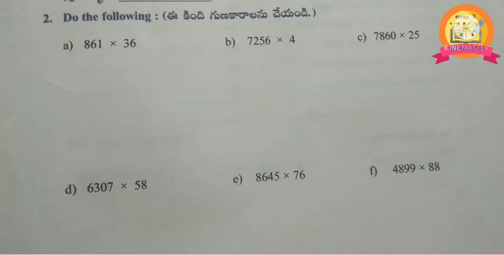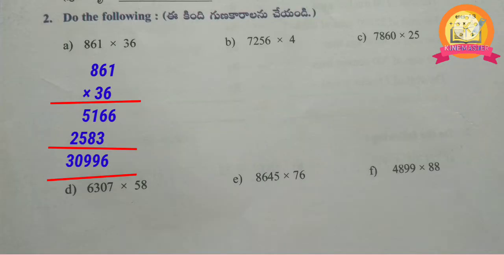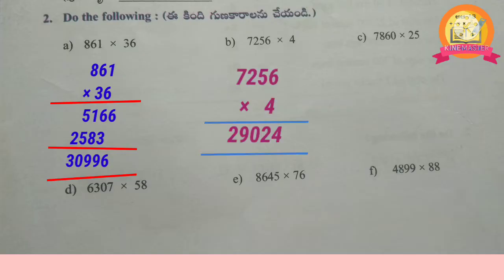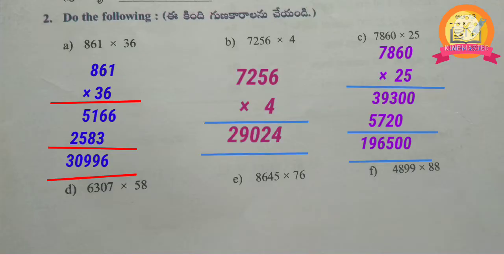Second roman: do the following multiplications. A: 861 multiplied with 36, we get 30,996. B: 7,256 multiplied with 4, we get 29,024. C: 7,860 multiplied with 25, we get 1,96,500.